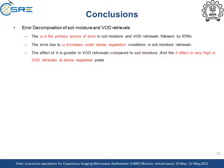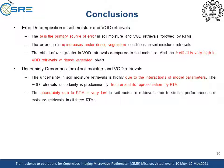From error decomposition analysis, it can be inferred that a large portion of uncertainty is from the scattering albedo followed by the RTM. The error from scattering albedo increases under dense vegetated conditions. The effect of H is greater in VOD retrievals and is very high in dense vegetated regions. From the uncertainty decomposition analysis, the major source of uncertainty in soil moisture retrievals is from the interactions of model parameters. In VOD retrieval, uncertainty is predominantly from omega and its representation by the RTM. The uncertainty due to RTM is very low in soil moisture retrieval due to similar retrievals in all three RTMs.